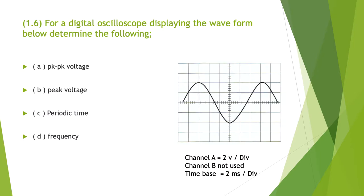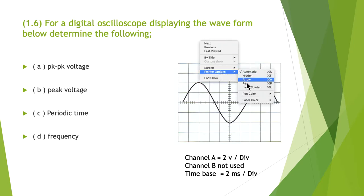Problem 1.6: For a digital oscilloscope displaying the waveform below, determine the following - we want to know the peak to peak voltage, the peak voltage, the periodic time, and the frequency. Before we jump into our hints, let's just do a little bit of a reminder.